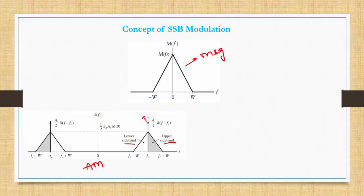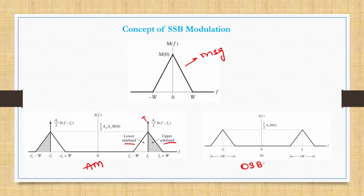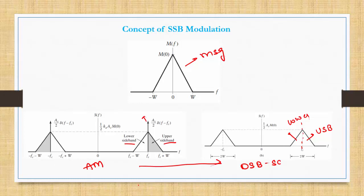Similarly, if we observe the spectrum of DSBSC — Double Sideband with Suppressed Carrier — in this case we suppress the carrier but we have two sidebands: upper sideband and lower sideband. So from AM to DSB the advantage is that we are saving the carrier power. But if we observe the transmission bandwidth, both in AM and DSBSC the transmission bandwidth is 2W, where W is the maximum frequency component of the message signal.